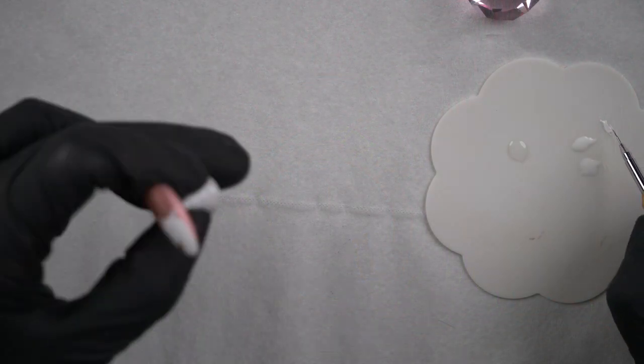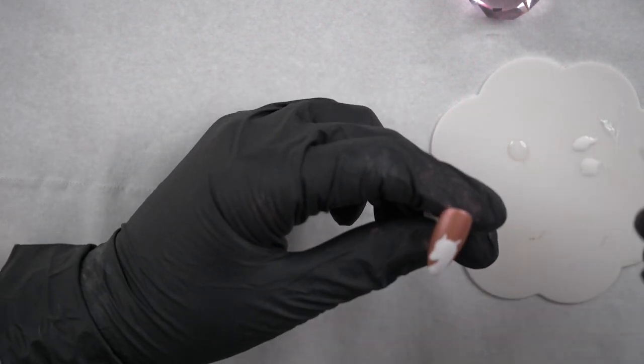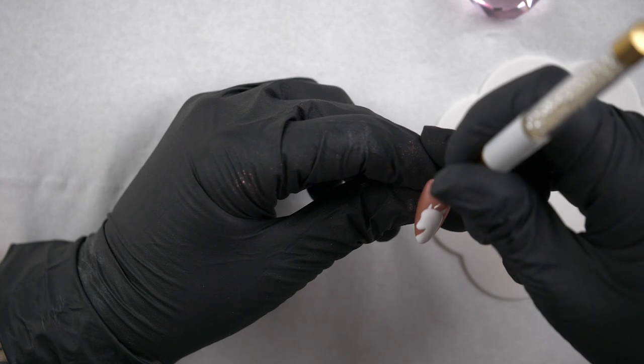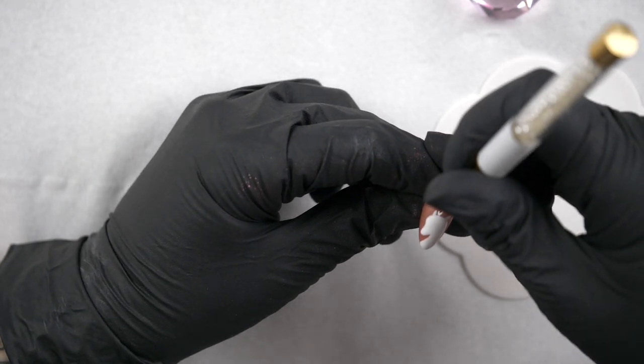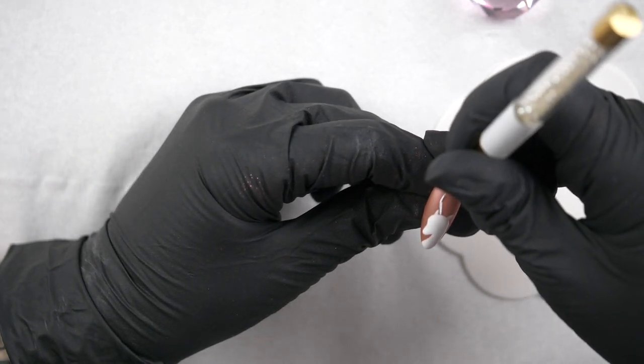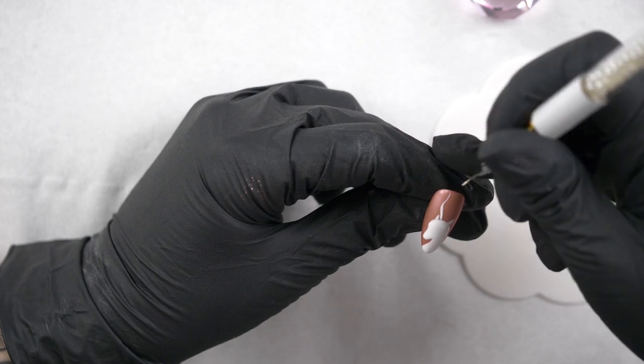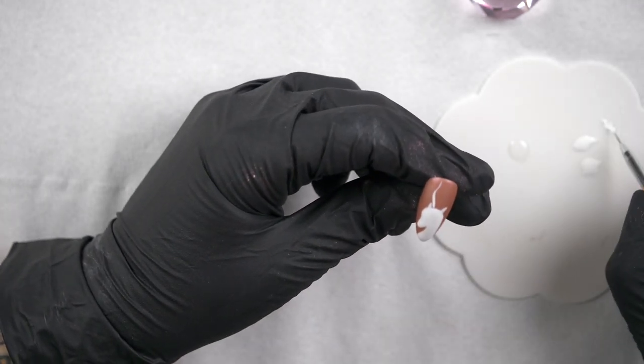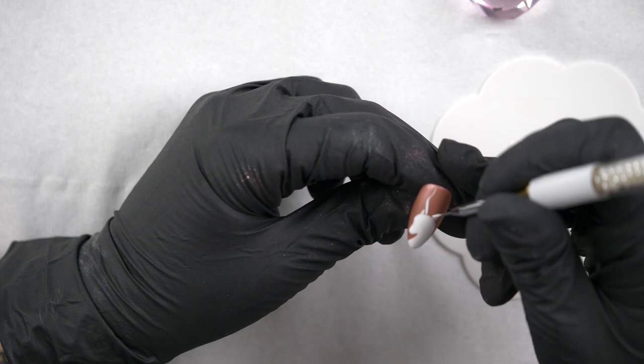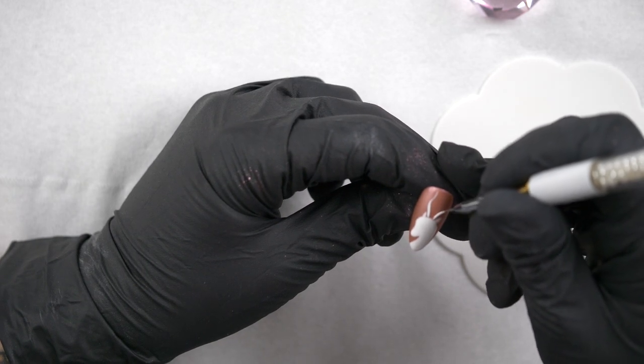Then once that's cured, I'm going to add in his antlers. So I'm going to do one at the front, and for this part I'm using the no-wipe gel paint because I want to be able to get those nice thin lines with it.